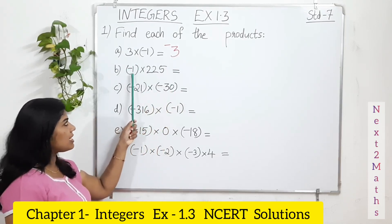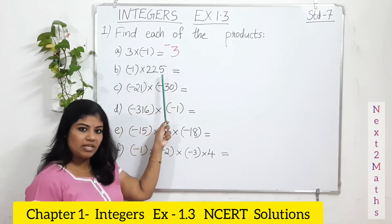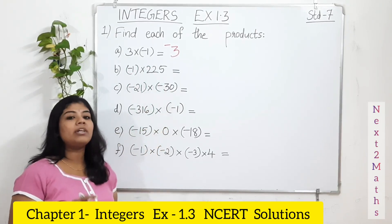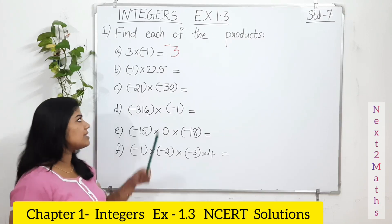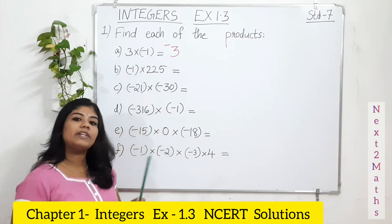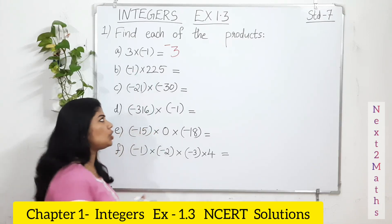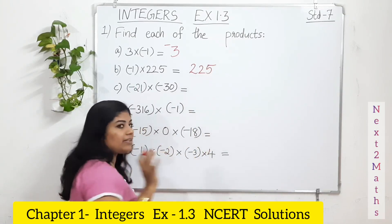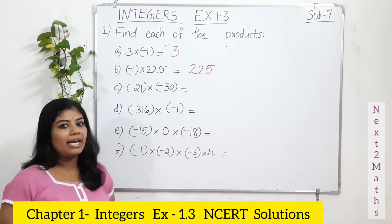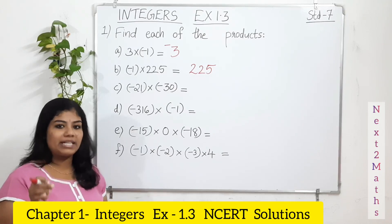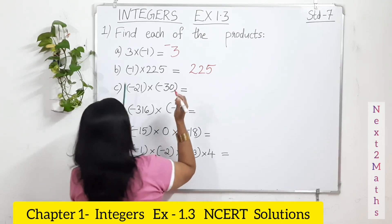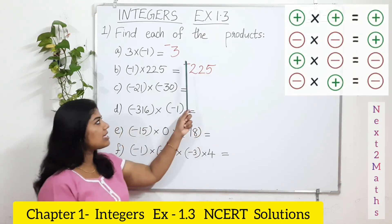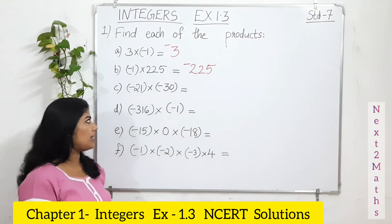Second one: negative 1 — this is a negative number and this is a positive number. Whatever it be, if one is negative and another is positive, just multiply both the numbers. 1 multiplied with 225 gives 225. Then, since there is only one negative, put that negative sign with your result. So your answer is negative 225.